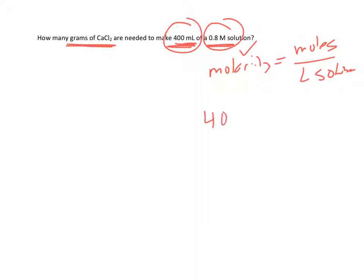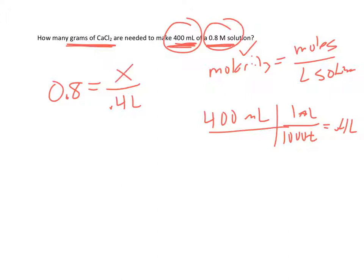So first, we'll convert the 400 milliliters into liters again. There's 1,000 milliliters in a liter. So 400 is 0.4 liters. Okay, so that's in the right form. So we can start plugging in. 0.8 is the molarity. We know the volume is 0.4. We don't know this value. So we're going to solve for x.